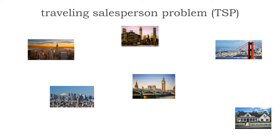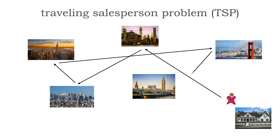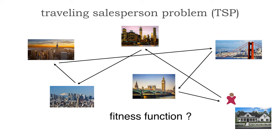For example, the TSP — the traveling salesperson problem — perhaps one of the most complex problems in computer science, is a great example. Here we have the salesperson traveling to various cities, hopping back and forth before she finally arrives back at home. What would be a good fitness function for this? It's an objective measurement of some characteristic of our problem.